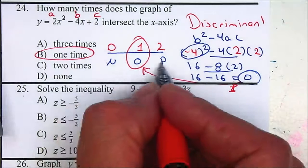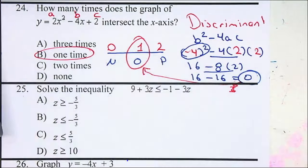But for now, we can just use NOP. If it's 0, we have 1 solution or 1 time.